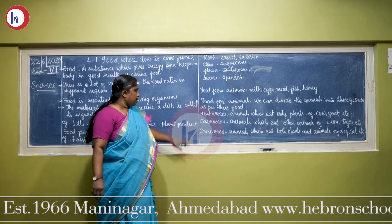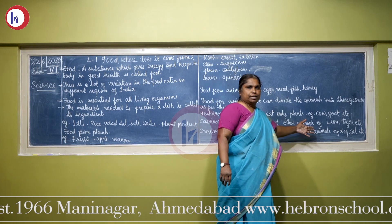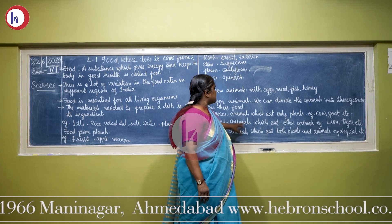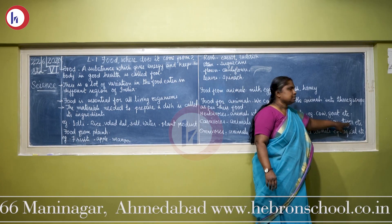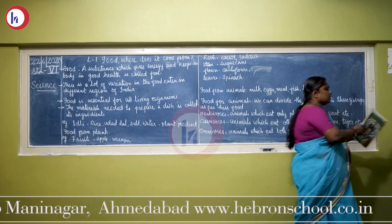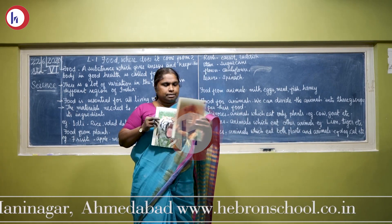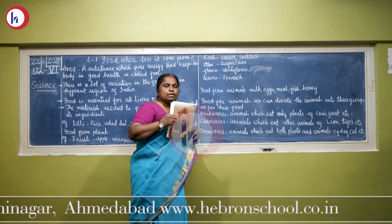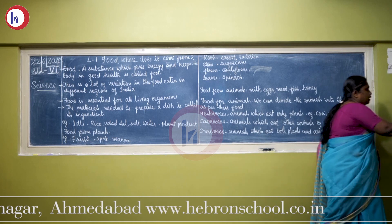The second group is carnivore animals. Carnivore animals are animals which eat other animals — they kill other animals and eat their flesh. Such animals are called carnivores. Examples: lion, tiger, etc. are carnivore animals because they eat only the flesh of other animals.